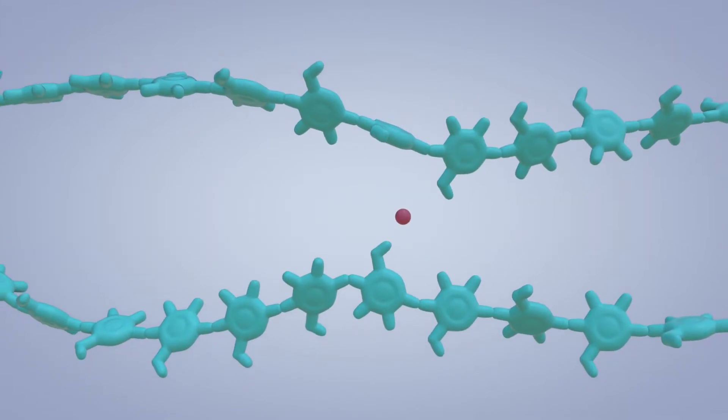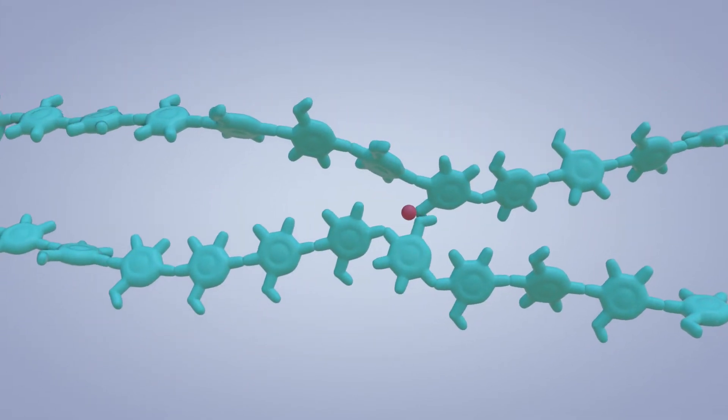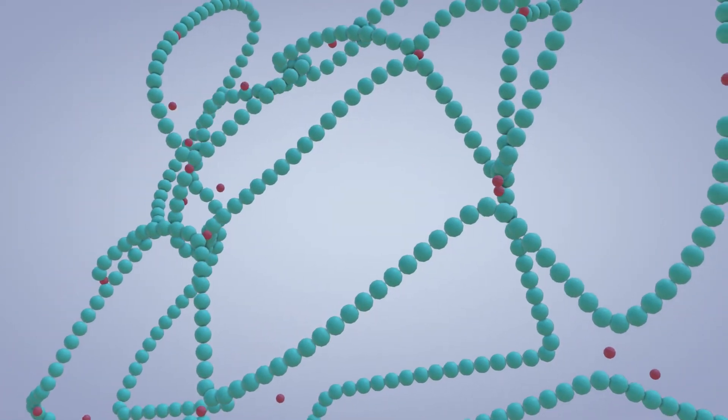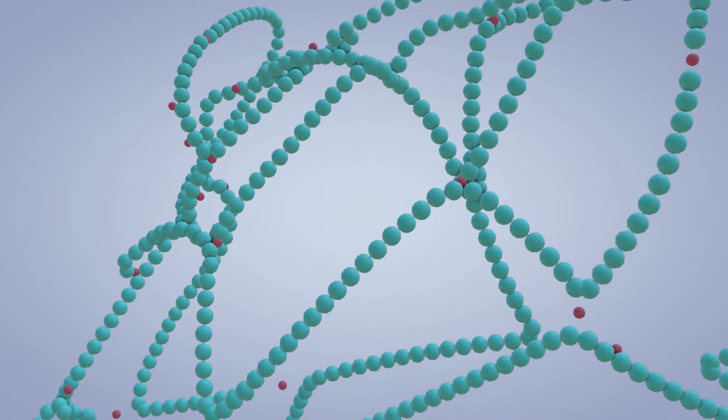The calcium grabs two polymers, because it is twice as positively charged, and holds them together in the process. This is called cross-linking.